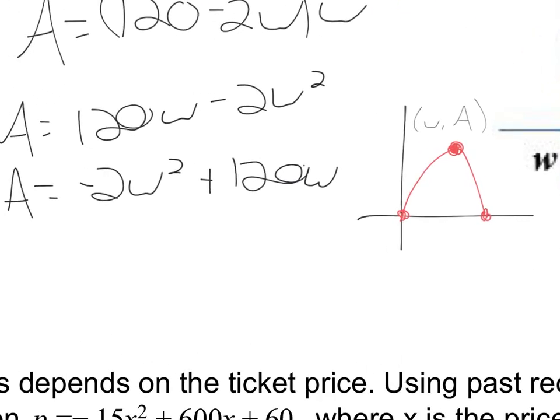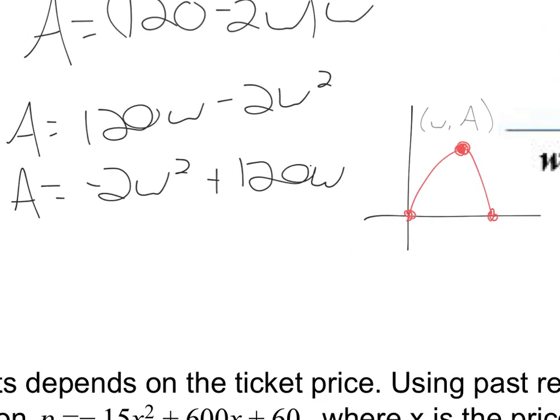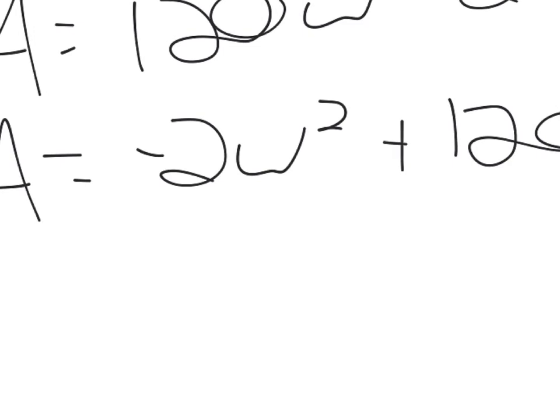So let's solve for the width. If I'm finding the vertex, we would just do -b/(2a). So the opposite of b over 2a, that'd be the opposite of 120 divided by 2 times a, which is -2. So that'd be -120 divided by -4. Well, that's going to give me 30. So the width is going to be 30 feet.